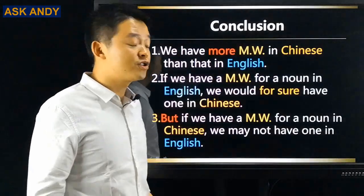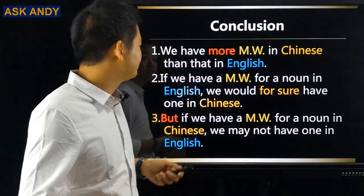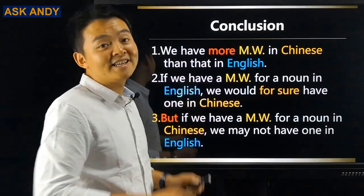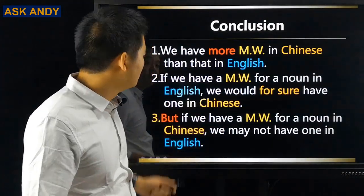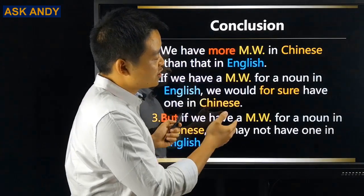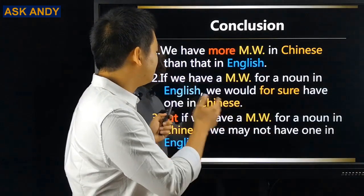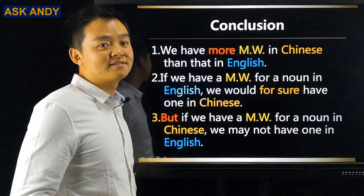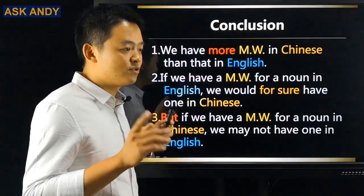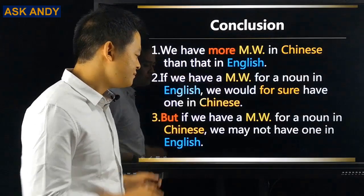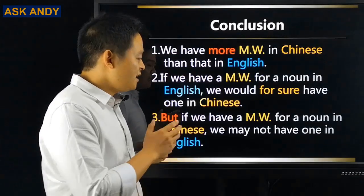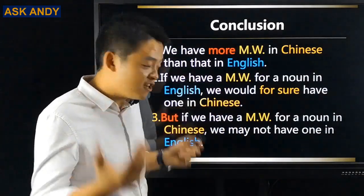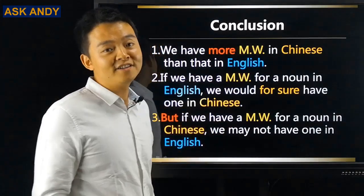Here is the conclusion. Point one: we have more measure words in Chinese than in English. Point two: if we have a measure word for a noun in English, we will for sure have one in Chinese — that is not difficult. Point three, the tricky part: if we have a measure word for a noun in Chinese, we may not have one in English.